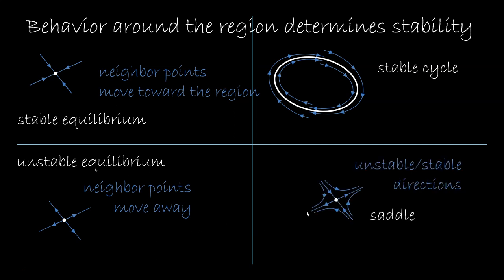You can also have something more interesting. Along some directions you are stable, you go toward the region, and along other directions you are unstable, you go away from the region. These are called saddles, like the one of the horses, and an attractor is simply a stable region.